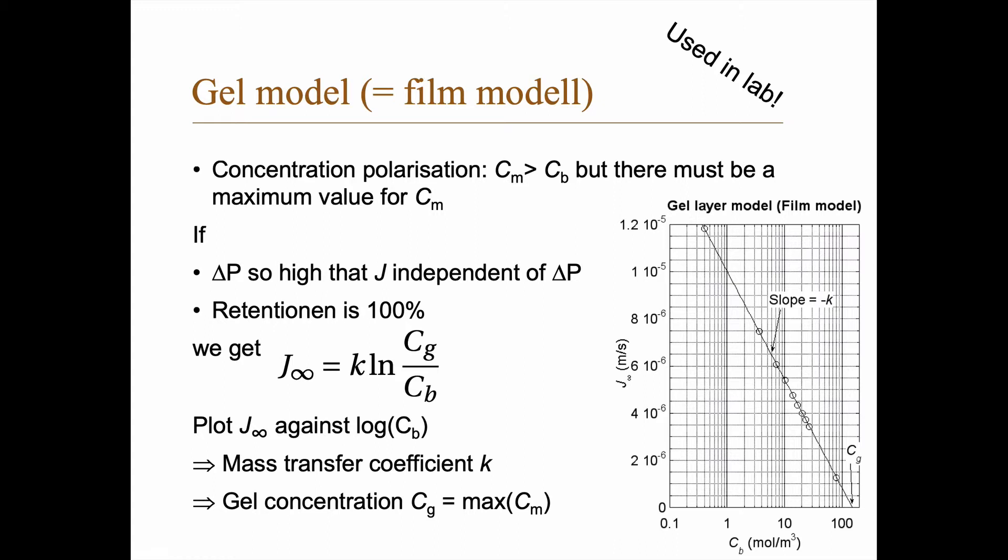There is another kind of model called the gel model or the film model. If you think of the concentration polarization, you know that C_m, the concentration near the membrane, is larger than C_b, but surely there must be a maximum value for C_m. I mean, C_m can't be infinite, right?